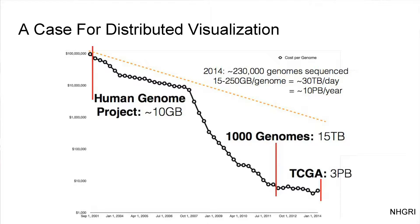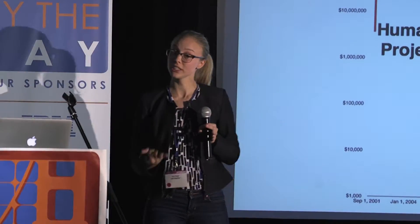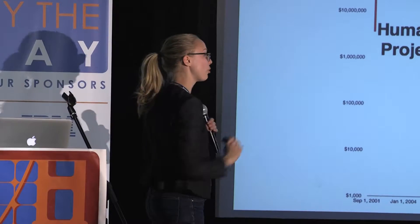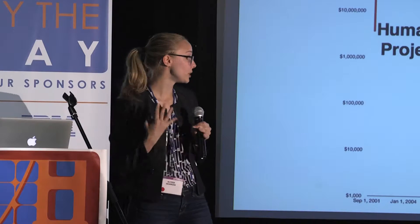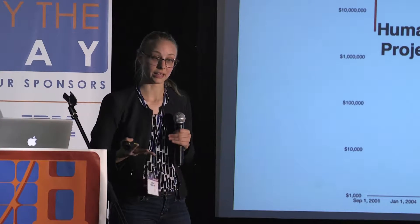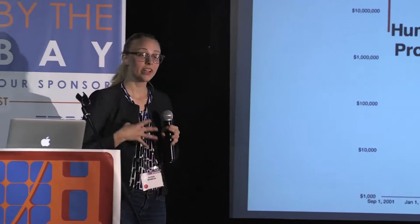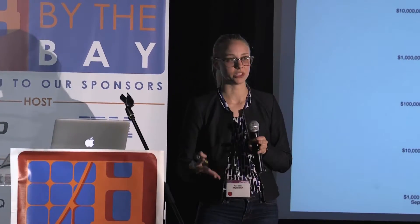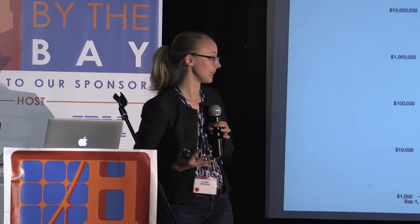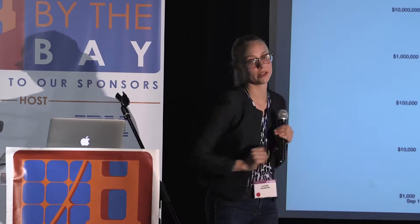Back in the early 2000s, the Human Genome Project left us with only 10 gigabytes of data, easily fit on a single machine. But in 2014, projects like TCGA are producing three petabytes of raw genomic data. Three petabytes doesn't fit on an individual laptop, so this is the case for distributed visualization — running on commodity machines while scaling up to these larger data sets.